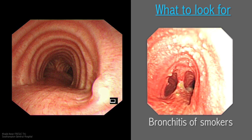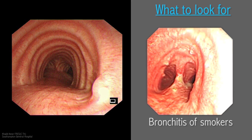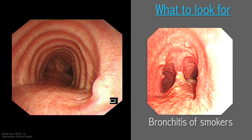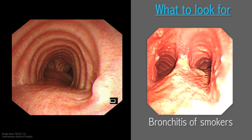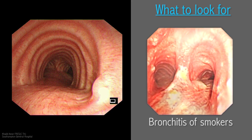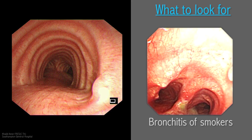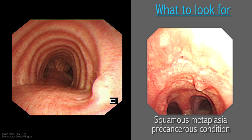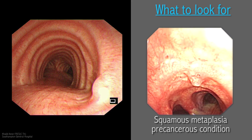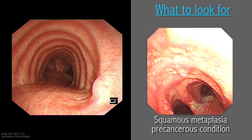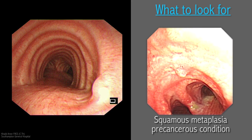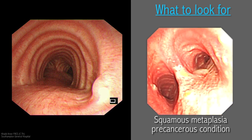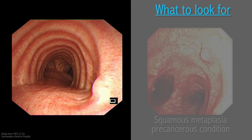Diffuse mucosal injection and thickening is seen in chronic smokers. Irritation of the tracheal mucosa by smoke leads to non-ciliated squamous metaplasia. Although the condition is benign, metaplasia in smokers can progress to lung cancer. Random mucosal biopsy is usually non-contributory.